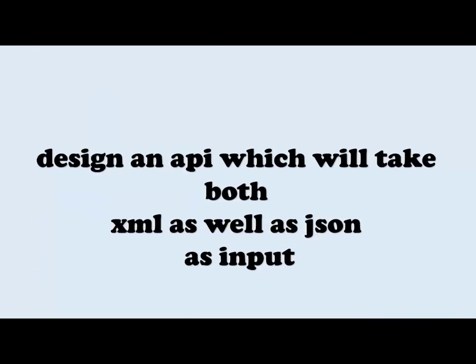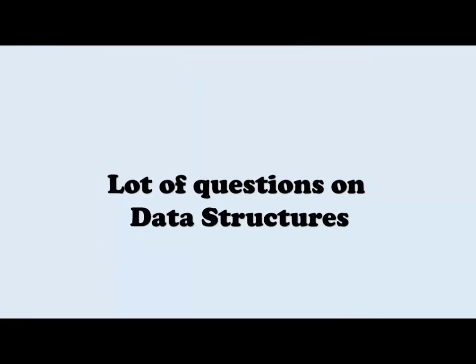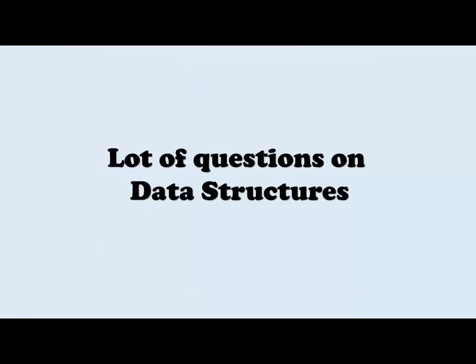Write code to consume an API — you can use RestTemplate or Feign client. Design an API that takes both XML and JSON as input — this is a tricky but simple question that many developers don't know; you can Google it for a nice solution. There were also a lot of questions on data structures — what data structures you know, explain them, and in a given scenario, which data structure would you use.